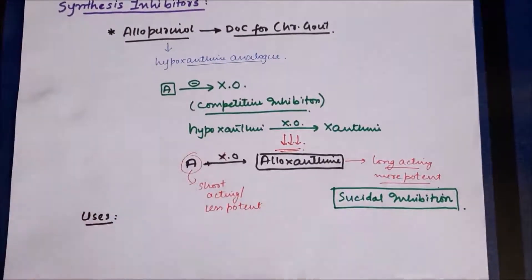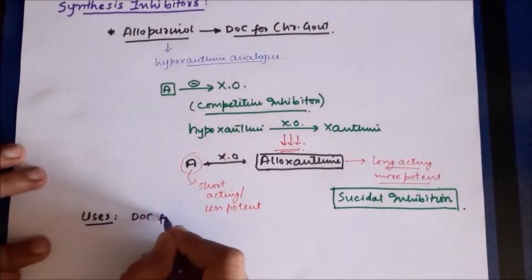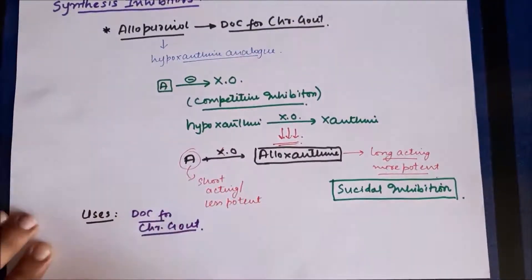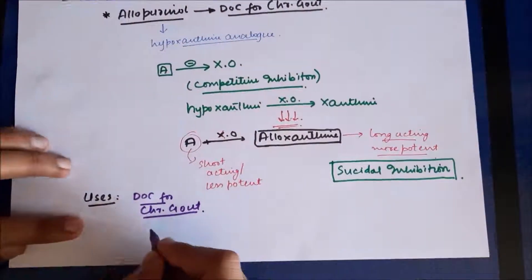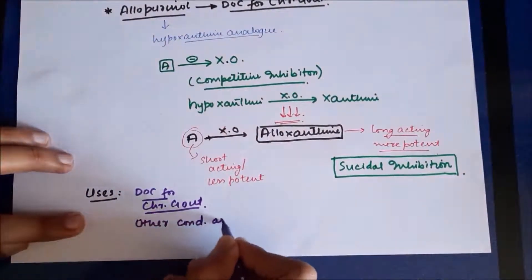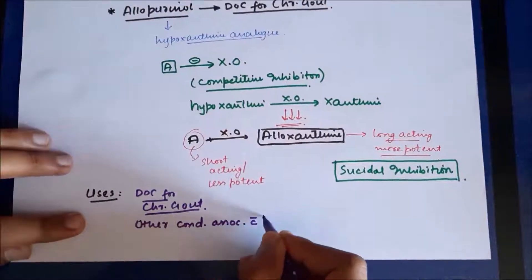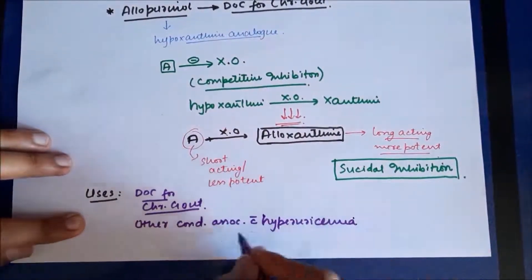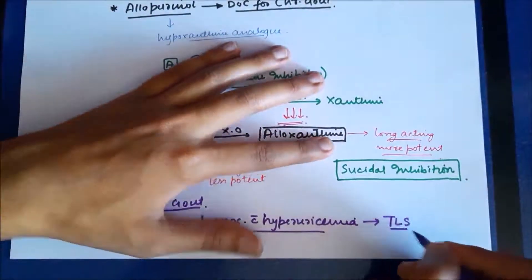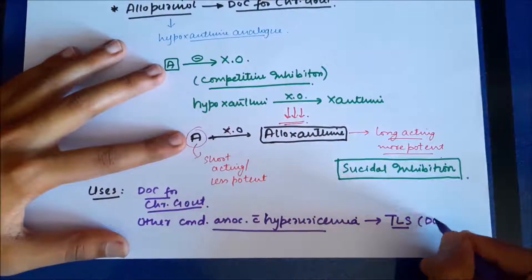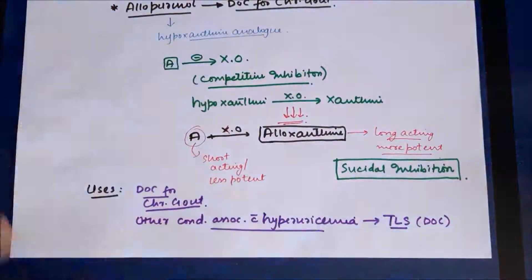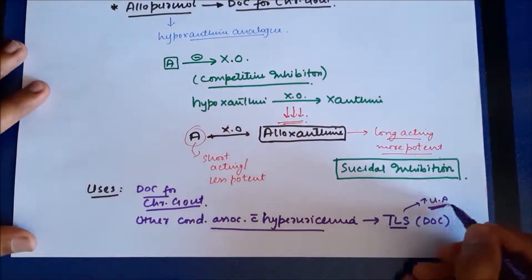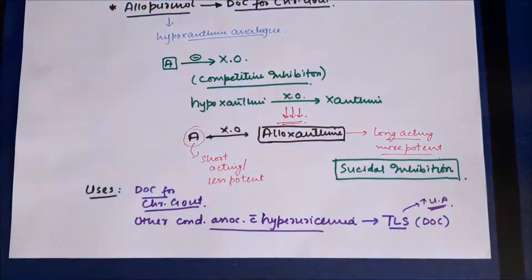Allopurinol is the drug of choice for treatment of chronic gout. It can also be used for other conditions associated with hyperuricemia, such as tumor lysis syndrome, in which there is excessive lysis of tumor cells resulting in increased metabolism of nucleic acids and increased uric acid production.